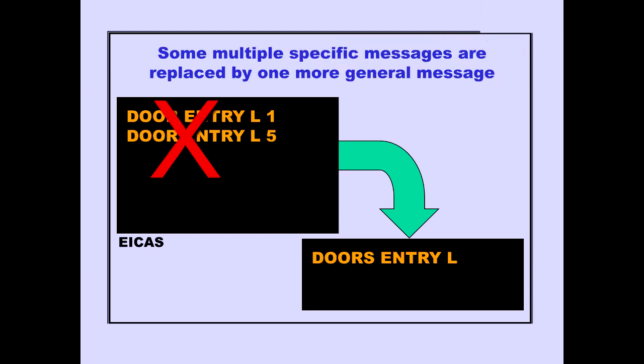For some non-normal situations, multiple ICAST alert messages are replaced by a single, more general message. For example, if entry door 1 left is not latched, the ICAST advisory message door entry left 1 is displayed. However, if both door 1 left and door 5 left are not latched, the ICAST advisory message door entry left replaces the individual messages.